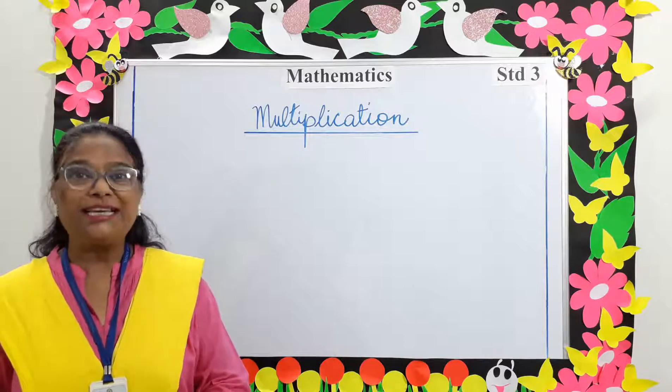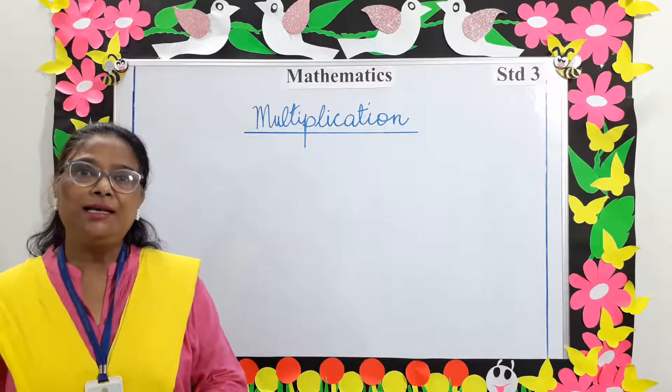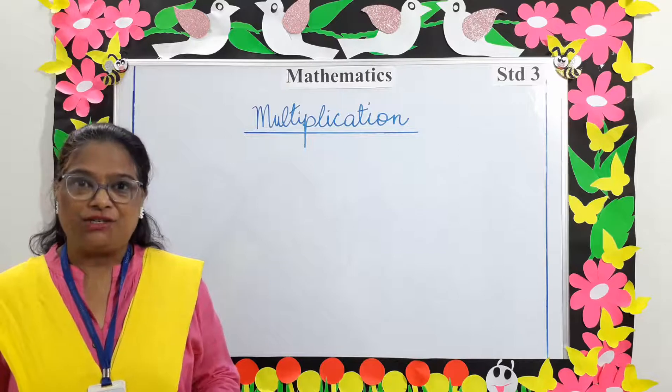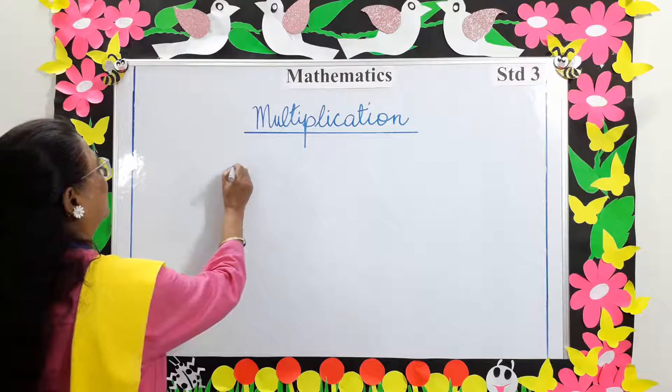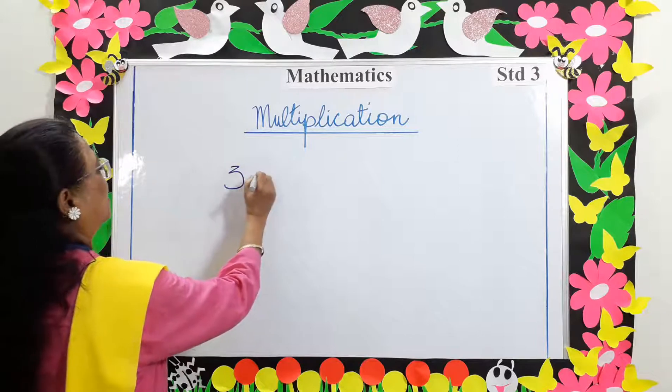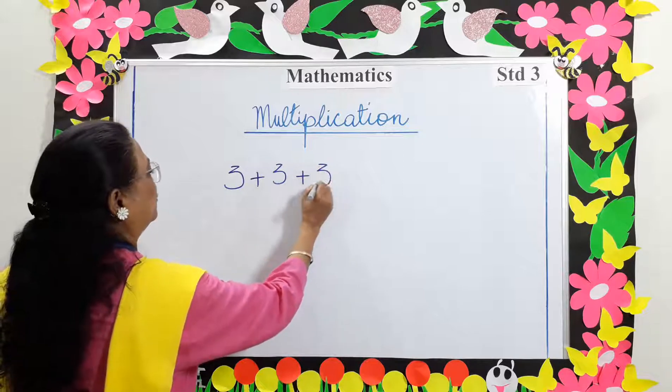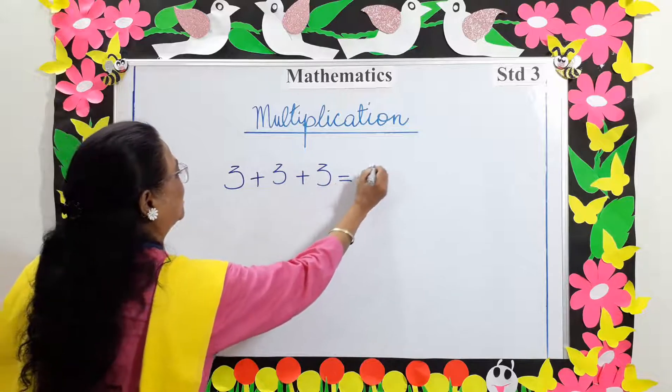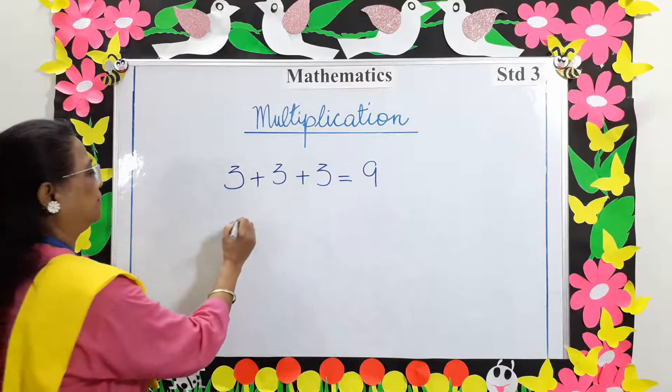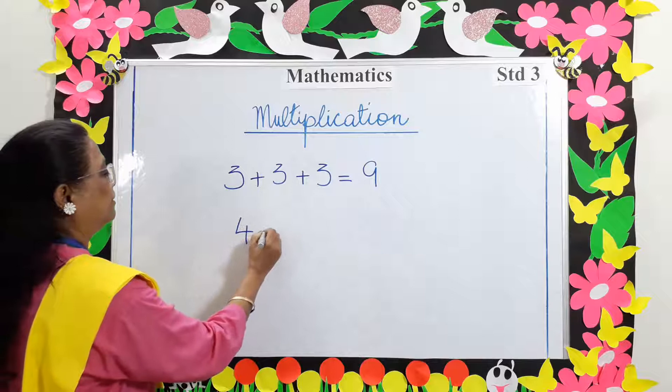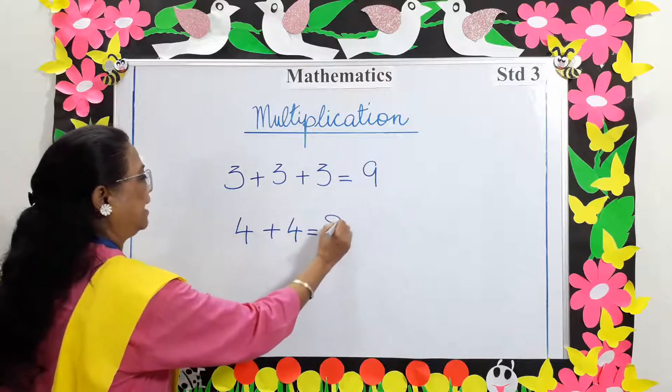So what is multiplication? Multiplication is simple repeated addition. Example: 3 plus 3 plus 3 equals 9. Another example: 4 plus 4 equals 8.